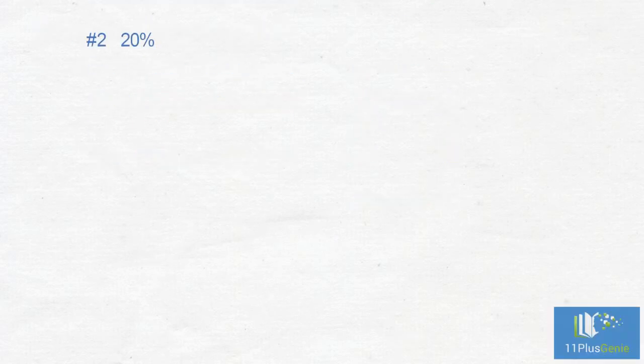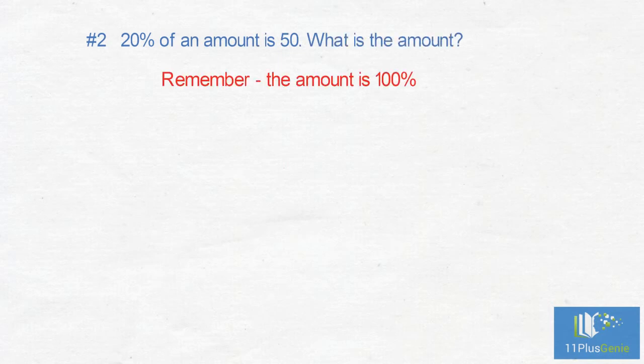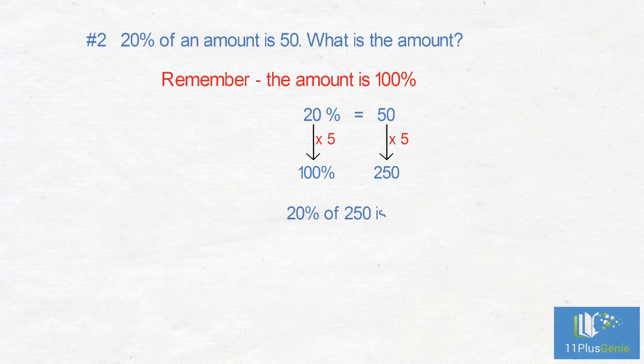Number 2: 20% of an amount is 50. What is the amount? 20% equals 50. To find 100% we multiply by 5. 20% times 5 equals 100%, and 50 times 5 equals 250. The amount is 250.